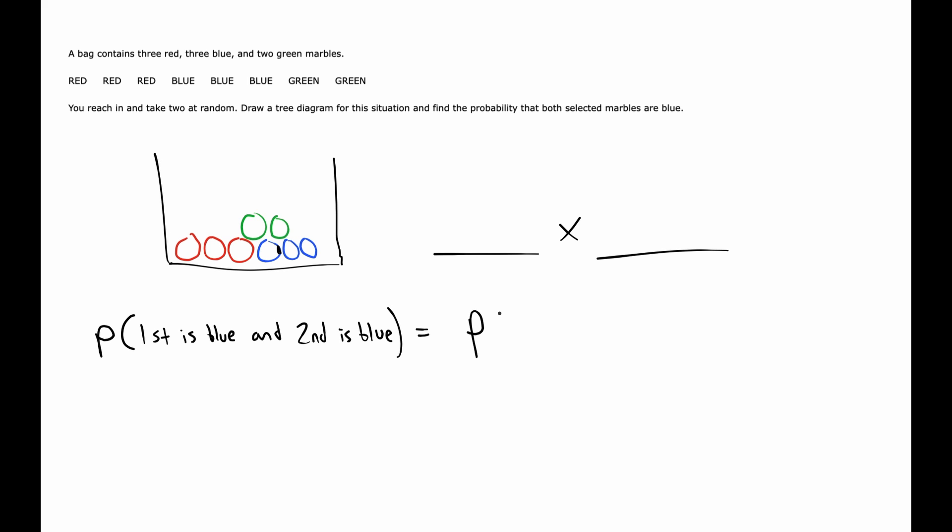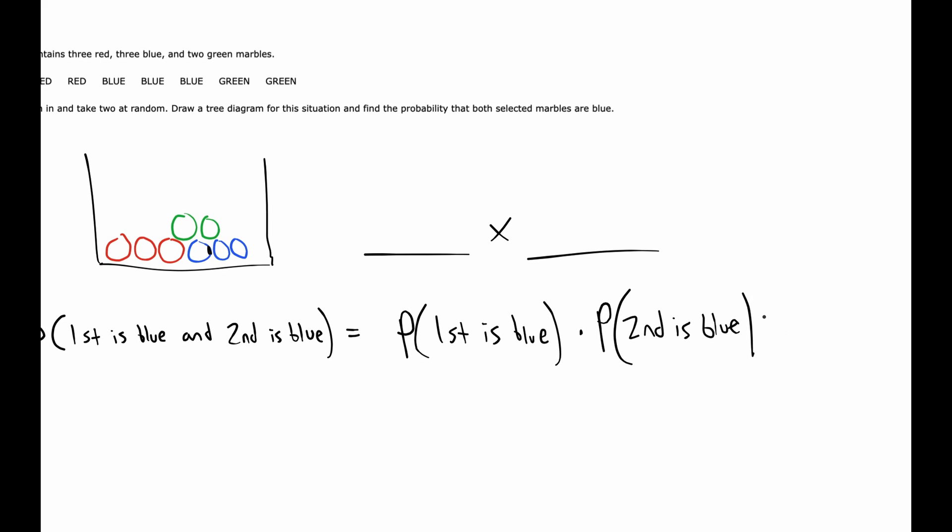The formula for 'and' says you'll do the probability of the first thing occurring, and then you would multiply by the probability of the second event, but that has to be given that the first event has happened.